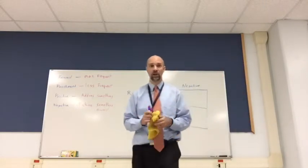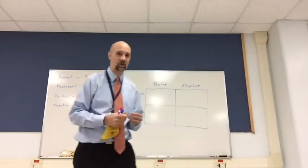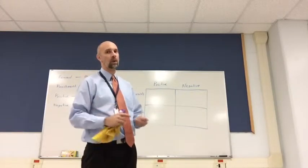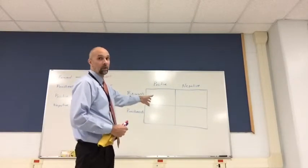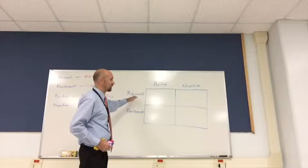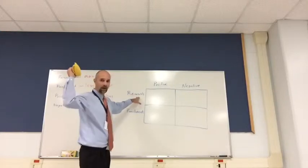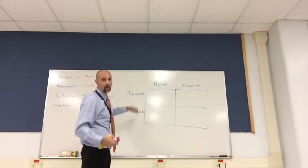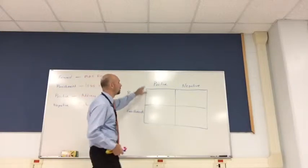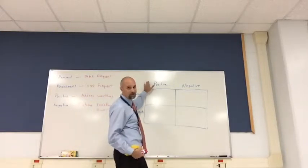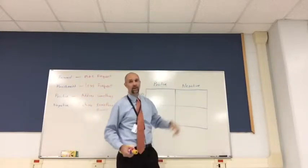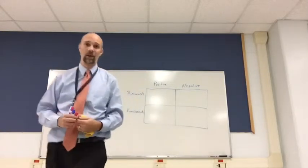Whenever I'm questioning, especially on an AP test, if I've got a question and I'm not sure where to go with it, I draw up a little Punnett square and just remind myself that rewards are going to happen more frequently, punishments are happening less frequently. Positive means something is being added. Negative means something is being taken away.